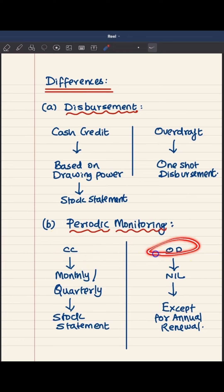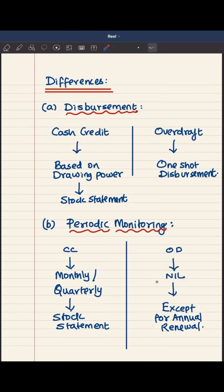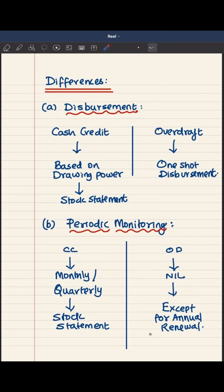But in case of overdraft, since the entire amount is already disbursed in one shot, there is no question of monthly review or monthly stock statement. There is no periodic monitoring except for the annual renewal that takes place.